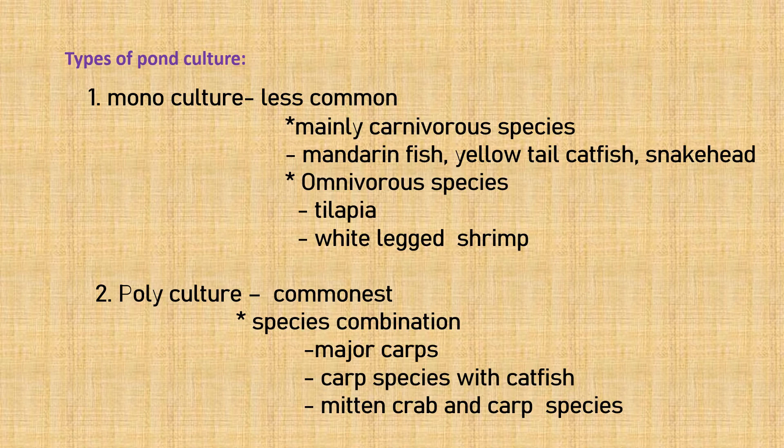The next type is polyculture, which is the most common. Species combinations may include major carps, carp species with catfish, and mitten crab with carp species.